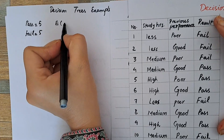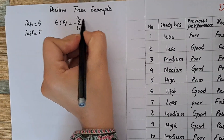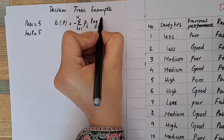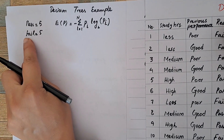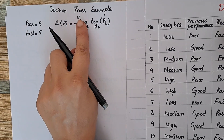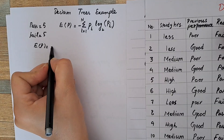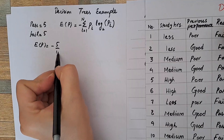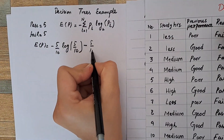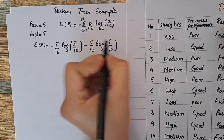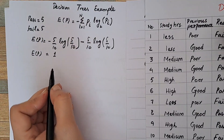Our first step is to evaluate the entropy of the whole dataset. This is equal to negative summation from i=1 to N of probability(i) times log base 2 of probability(i). Since we have just two classes — pass and fail — N equals 2. Entropy equals negative of: probability of pass is 5/10, take log of 5/10, minus probability of fail is also 5/10, take log of 5/10. Simplifying, entropy of the overall dataset equals 1.